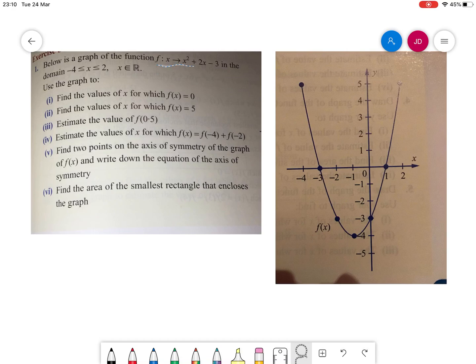In this question we're given the function f(x) = x² + 2x - 3 in the domain of -4 ≤ x ≤ 2.